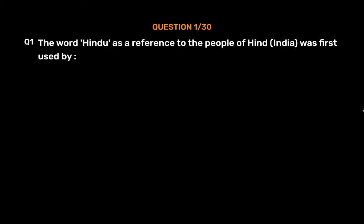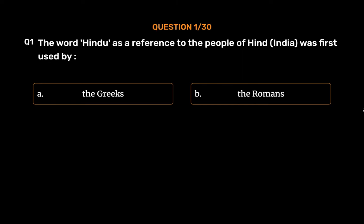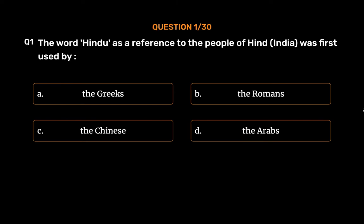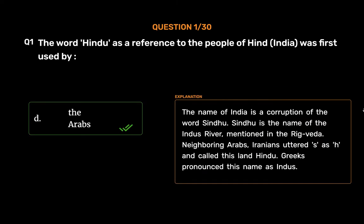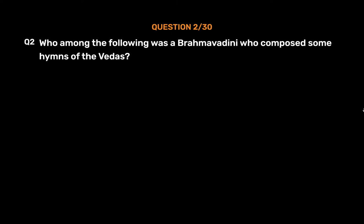Question number one: The word 'Hindu' as a reference to the people of Hind (India) was first used by — Option A: the Greeks, Option B: the Romans, Option C: the Chinese, Option D: the Arabs. The correct answer is Option D, the Arabs. The name of India is a corruption of the word 'Sindhu,' the name of the Indus River mentioned in the Rigveda. Neighboring Arabs and Iranians uttered 'S' as 'H' and called this land 'Hindu.' The Greeks pronounced this name as 'Indus.'